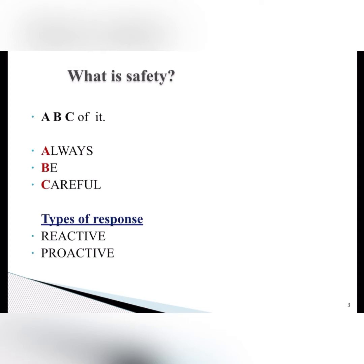The first type is reactive response — you are not covering any safety precautions, but when something happens, then you take safety measures. For example, if there is a fire in the camp kitchen and after the fire, extinguishers and fire blankets were posted — this is reactive safety response. The other type is proactive: safety measures are taken in advance. For example, fire extinguishers and fire blankets were already placed in the camp kitchen. This is proactive safety response.